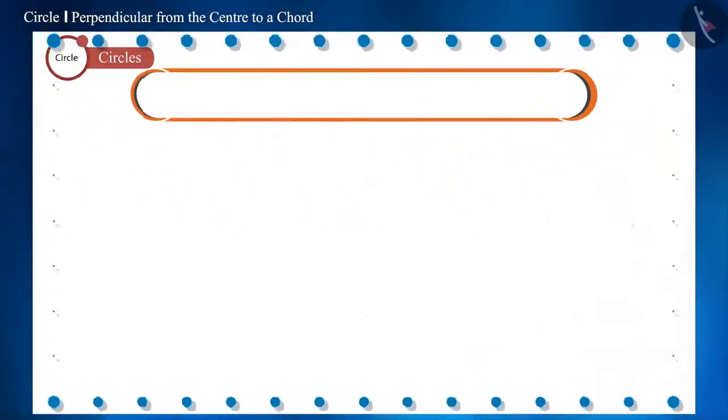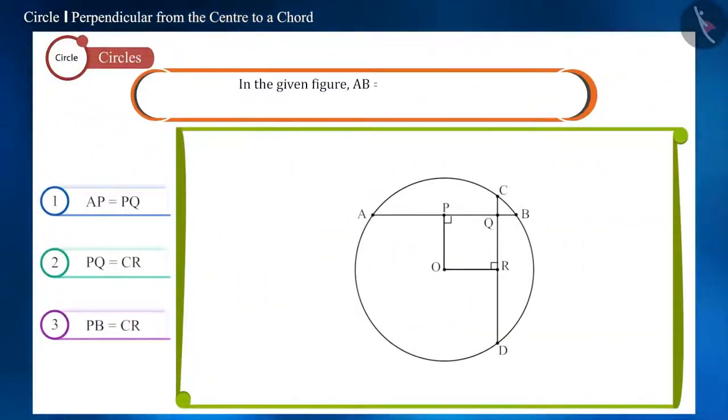Let's see the question. In the given figure, chords AB and CD are equal and line segments OP and OR are perpendicular to chords AB and CD respectively. Check the options given below and identify the correct option.